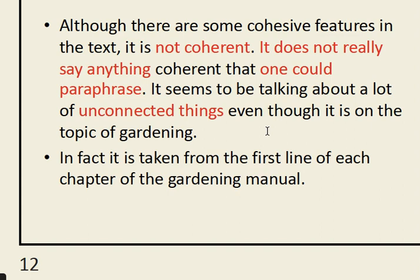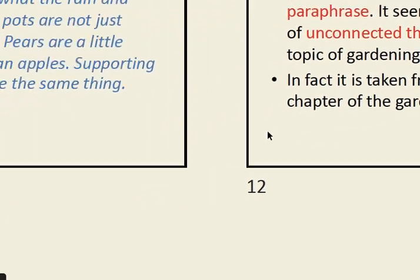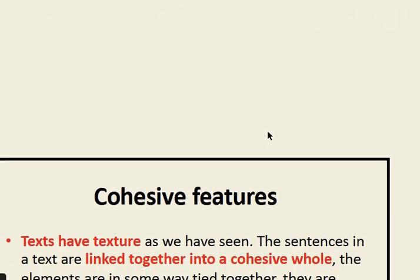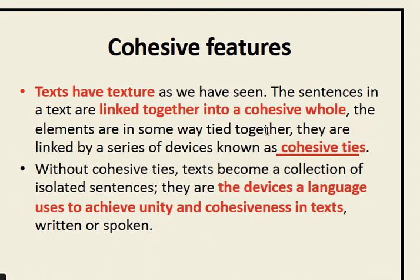That incoherent passage was in fact taken from the first line of each chapter of a gardening book, so it is not a coherent paragraph. There are certain cohesive features in the same paragraph — for example, sentences and texts are linked together into a cohesive whole through elements tied together. They are linked by a series of devices known as cohesive ties. Without cohesive ties, a text becomes a collection of isolated sentences. Cohesive ties are the devices a language uses to achieve unity and cohesiveness in written or spoken text. Without cohesive ties the paragraph won't be cohesive, and without a connecting ideological link the passage won't be coherent.